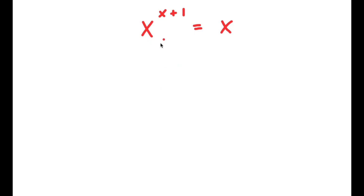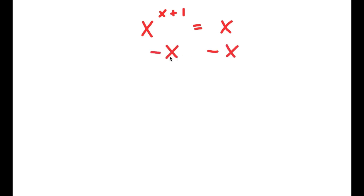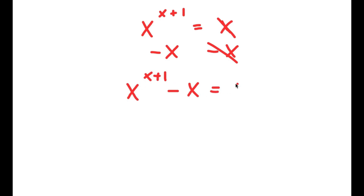In this problem, I have x to the power of x plus 1 is equal to x. To solve this, I'm going to start by subtracting x on both sides. These two cancel out, and I'm left with x to the power of x plus 1 minus x is equal to 0.